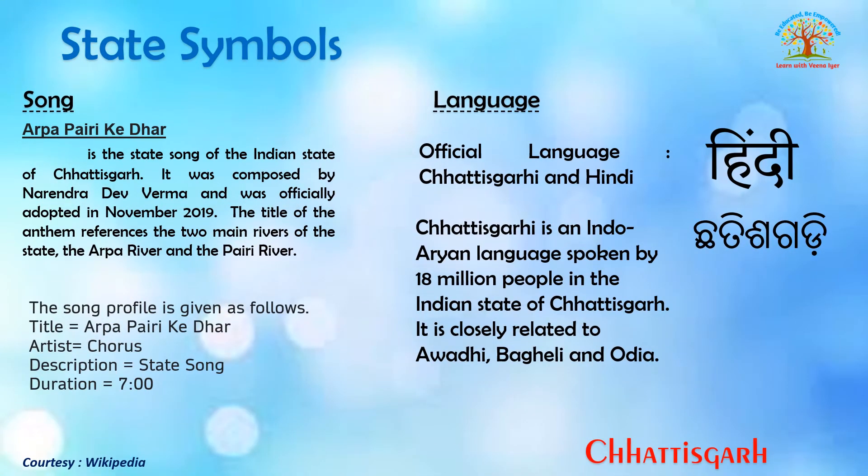The state song is 'Arpa Peri Ke Dhar.' The official languages spoken are Chhattisgarhi and Hindi. Chhattisgarhi is an Indo-Aryan language spoken by 18 million people in the state of Chhattisgarh. It is closely related to Awadhi, Bagheli, and Odia.